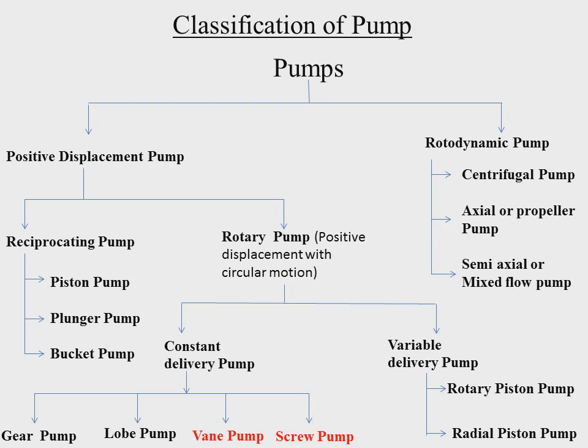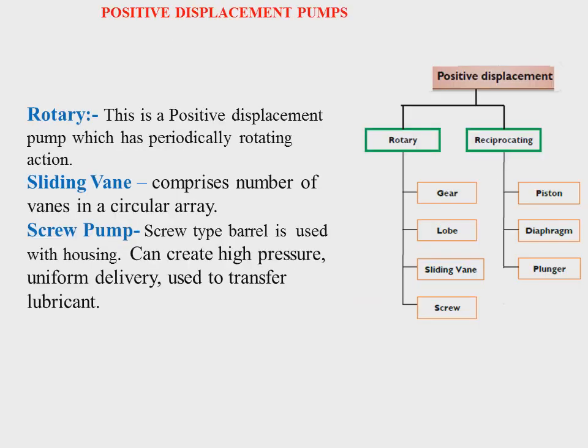Again I am repeating the classification of the pump for every class because classification is very important to understand the configuration of the pump — to properly classify its properties, where it is applicable, and what will be the nature of the pump. The vane pump and screw pump fall under the positive displacement rotary type constant delivery pump.